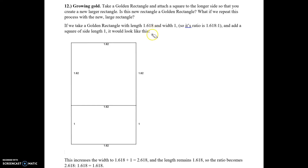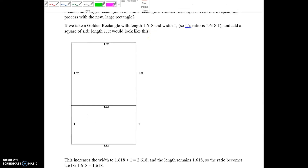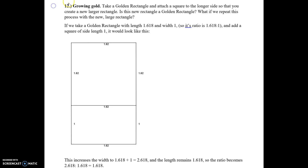If we just look at the decimals, the original rectangle, which is this one down here, would give us a ratio of 1.618 to 1. We're going to add to that a square — this should say a side of 1.618 — and it would look like this.